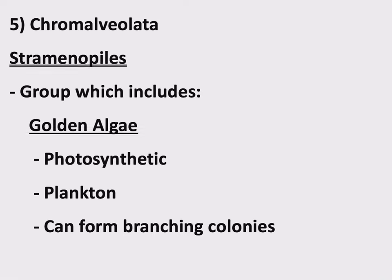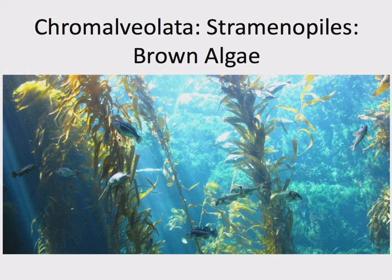A very interesting straminopile is brown algae. This is one of those protists that most people don't know is a protist. Brown algae is kelp, or sometimes called seaweed. Most people would look at this stuff washed up on a beach and identify it as a plant, because it looks a lot like a plant. It's photosynthetic, it's green — more or less kind of greenish-brown. It's got these quote-unquote leaves for photosynthesis. It looks just like a plant.